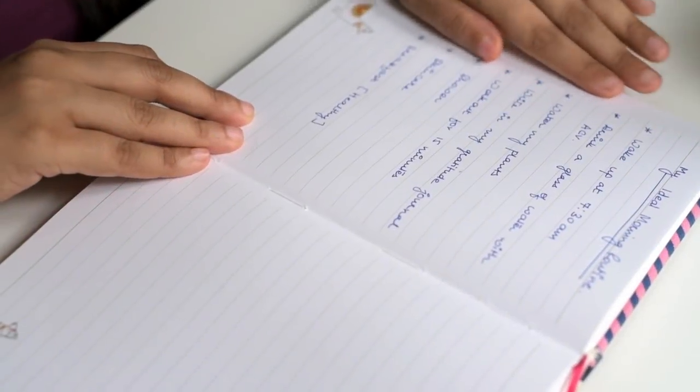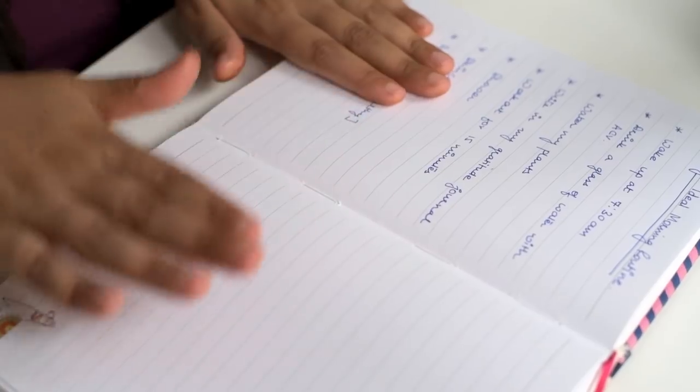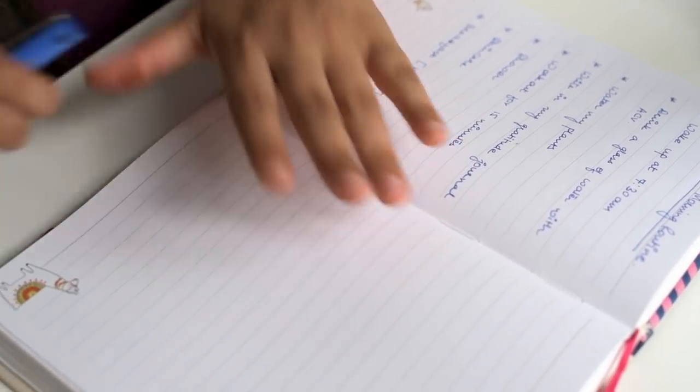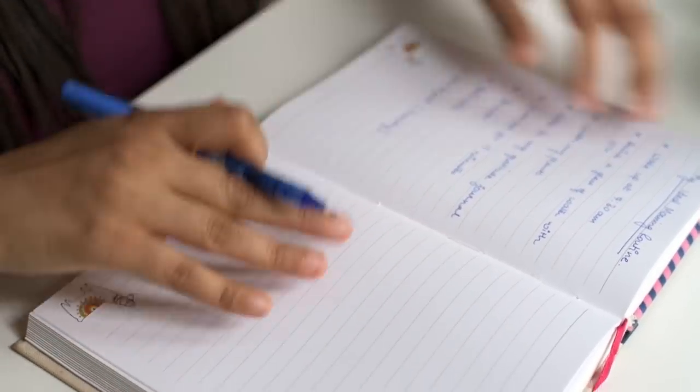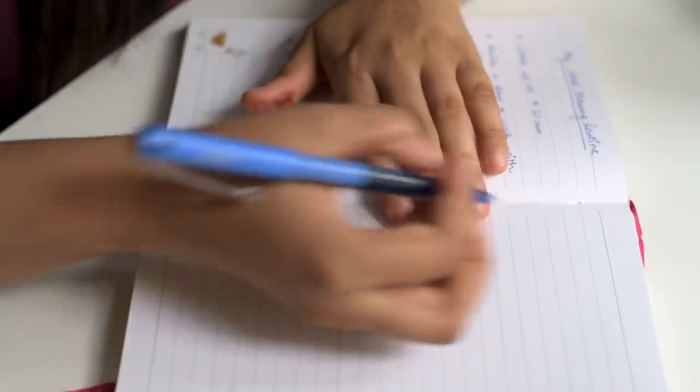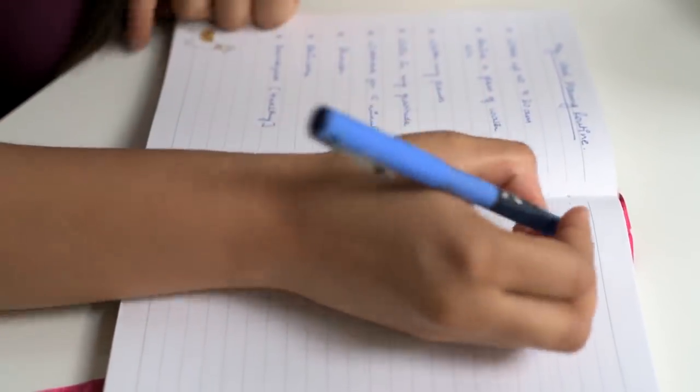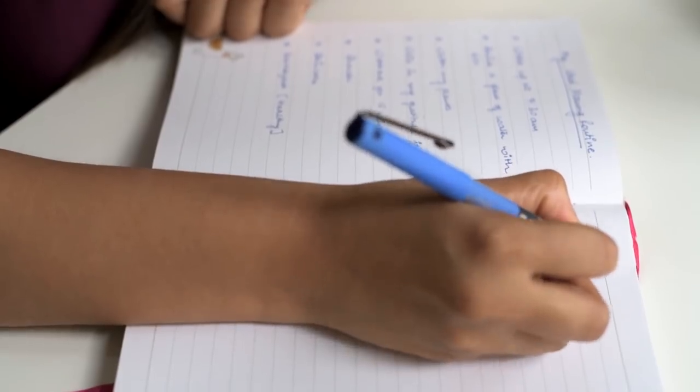Now once you have your ideal morning routine written on the left hand side, we'll move on to the right hand side of the page. Now on the right hand side is where we are going to create something which will allow us to stick to this in the long run. Here we're going to write down the enablers for each of these steps.